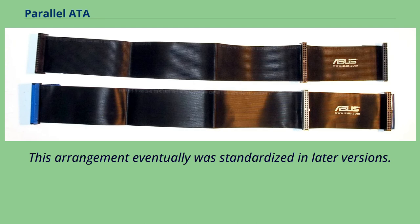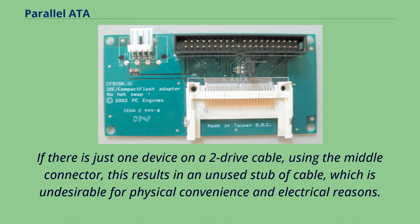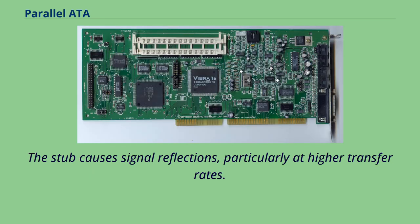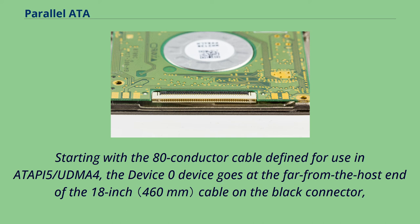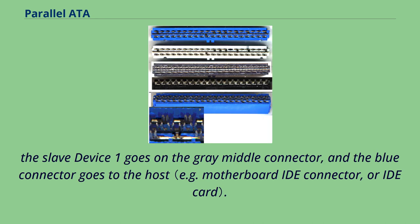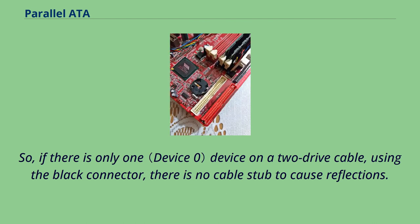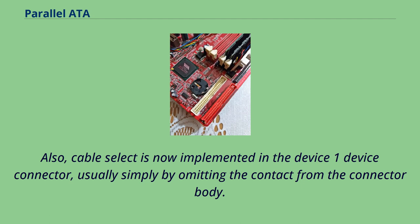With the 40-conductor cable, it was very common to implement cable select by simply cutting the pin 28 wire between the two device connectors, putting the device 1 device at the end of the cable and the device 0 on the middle connector. This arrangement eventually was standardized in later versions. If there is just one device on a 2-drive cable using the middle connector, this results in an unused stub of cable, which is undesirable for physical convenience and electrical reasons. The stub causes signal reflections, particularly at higher transfer rates. Starting with the 80-conductor cable defined for use in ATAPI-5/UDMA-4, the device 0 device goes at the far-from-host end of the 18-inch cable on the black connector. The slave device 1 goes on the gray middle connector, and the blue connector goes to the host. So if there is only one device on a 2-drive cable using the black connector, there is no cable stub to cause reflections.